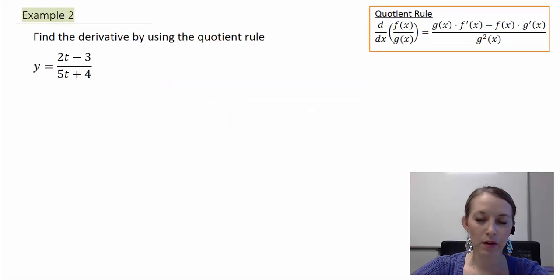So we have this example here. Obviously it's a quotient or a big fraction, a big division, so we want to take the derivative of it by using the quotient rule. I have the quotient rule up on the top right in case you forgot it.